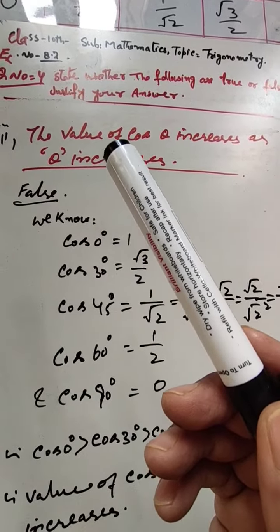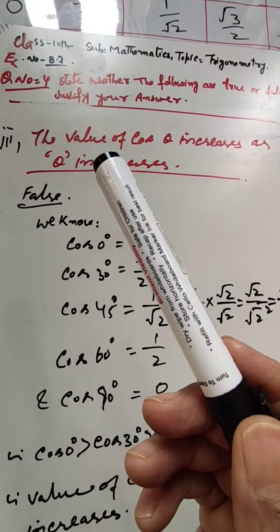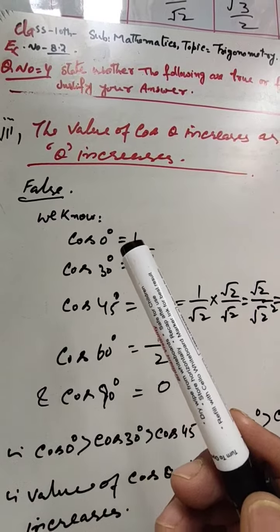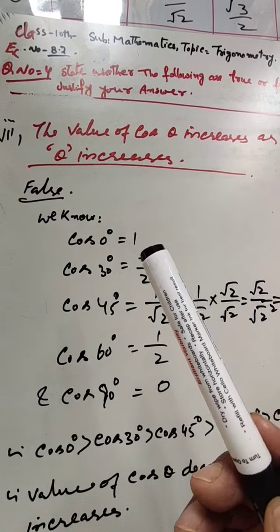The value of cos θ decreases with the increase in the value of θ. Here we know that cos 0° = 1.